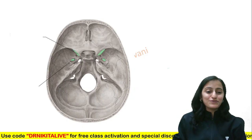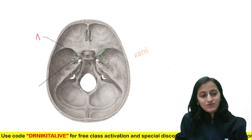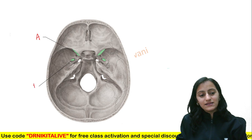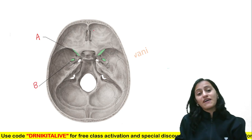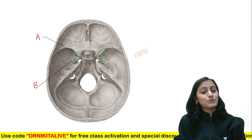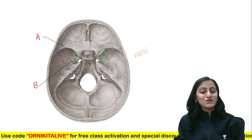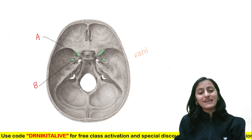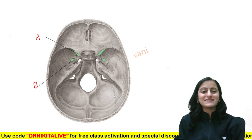Homework for you: let me know in the comments what these foramina are — structures A and B in the skull. We have discussed this in one of the NF100 episodes on YouTube. If you want to know the tricks for foramina of the skull and their contents, do watch that video as well — it's available on the same channel.